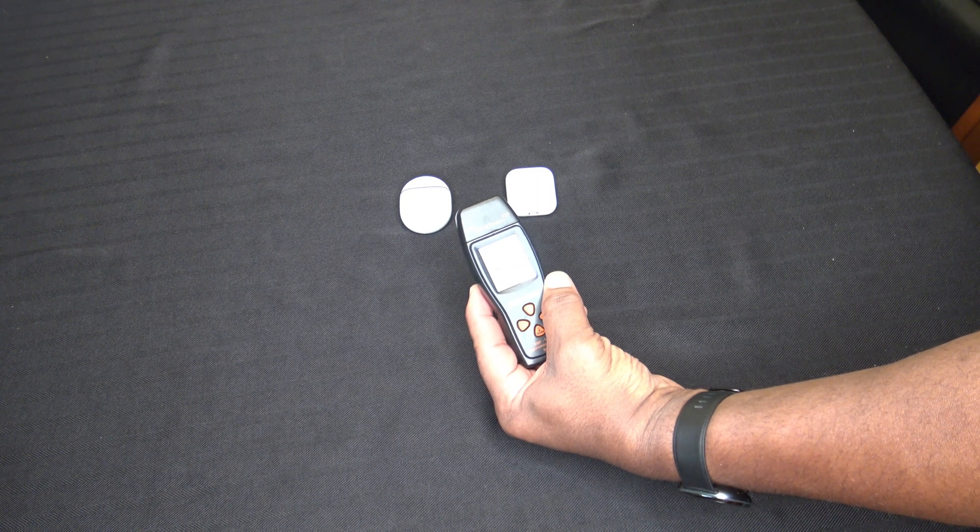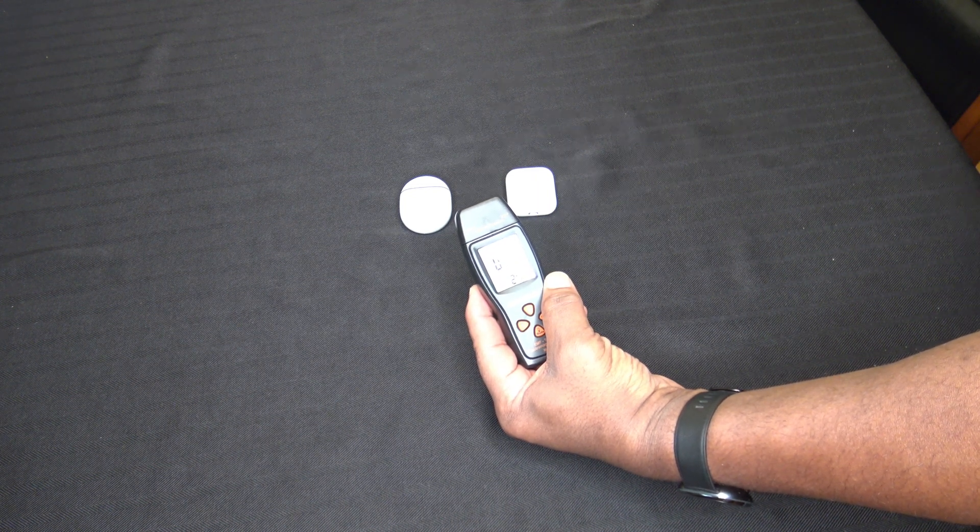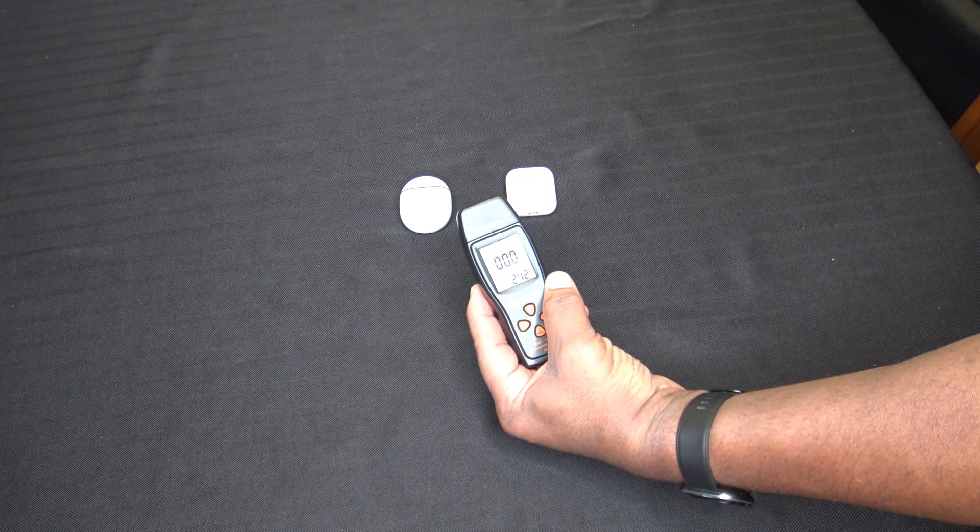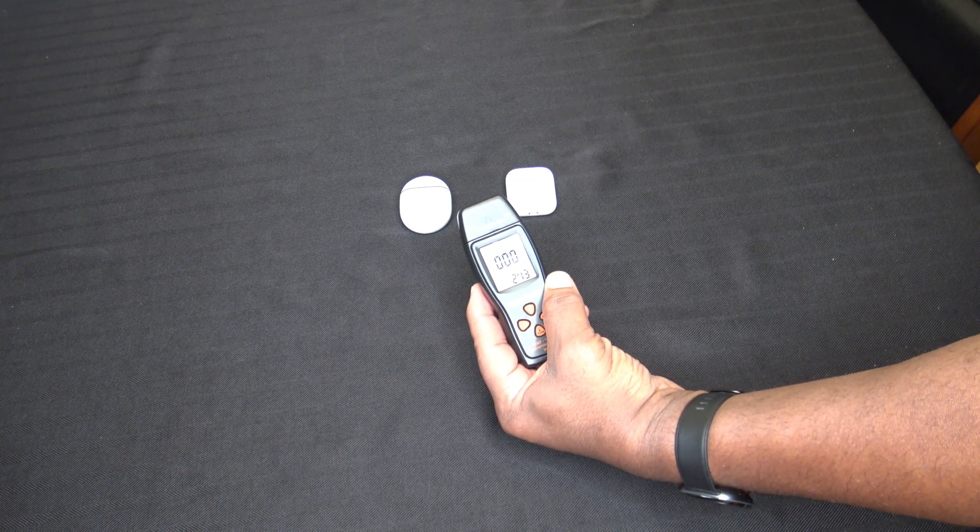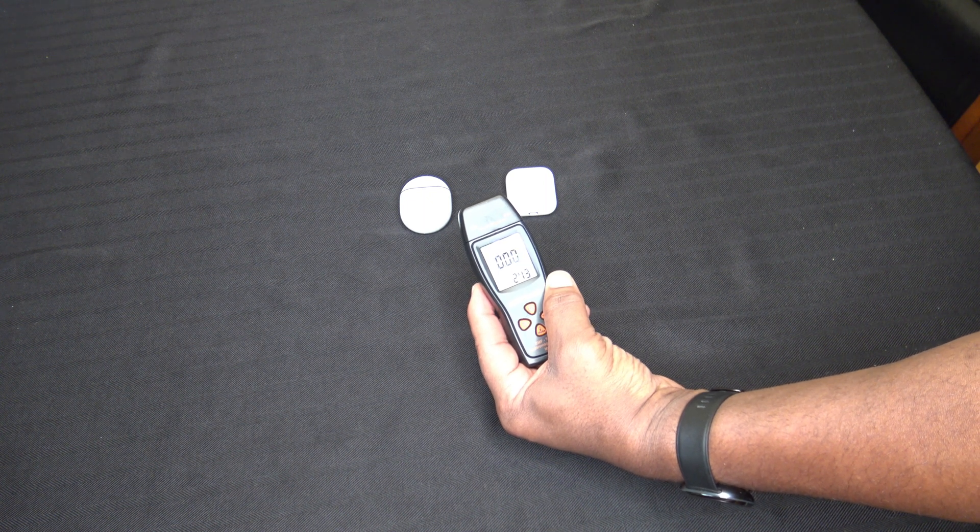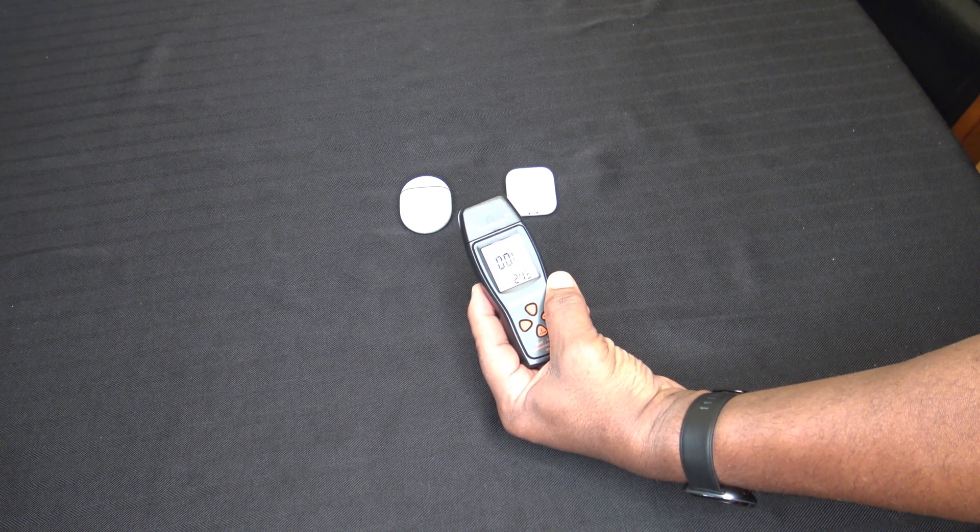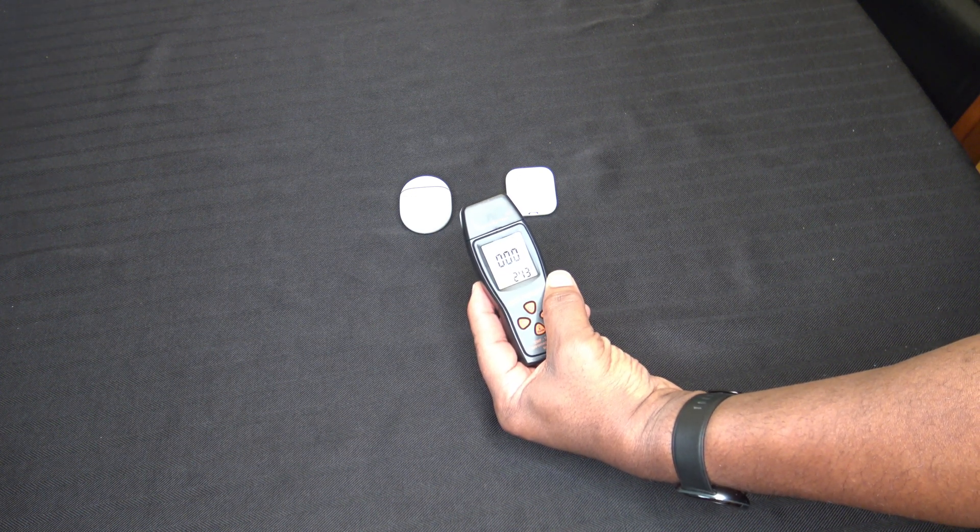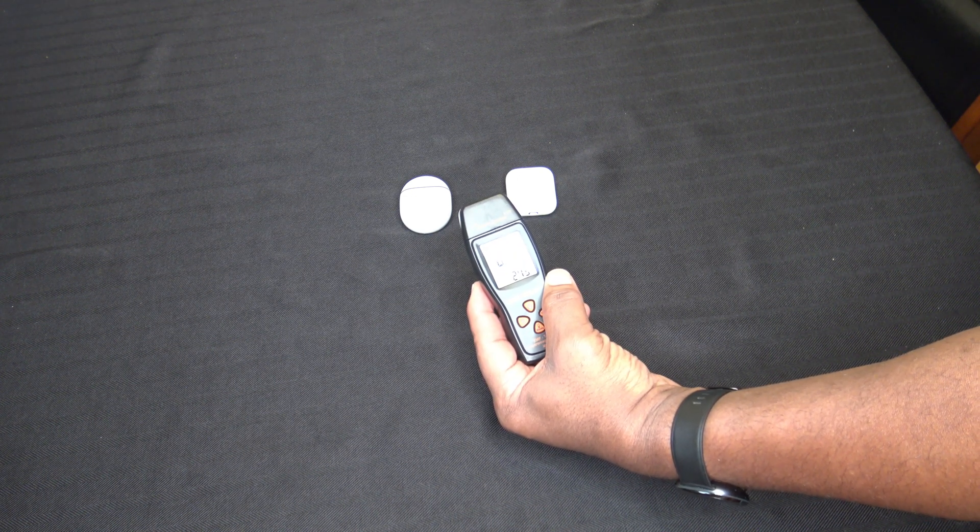that you get EMF readings from pretty much everything electronic. I could literally put this up to a light switch and it would start beeping. Literally anything electronic is going to give a field, certain degrees. I mean, some give more than others. Of course, a light switch is not going to give as much as if you put it up to a microwave oven. So, big difference.